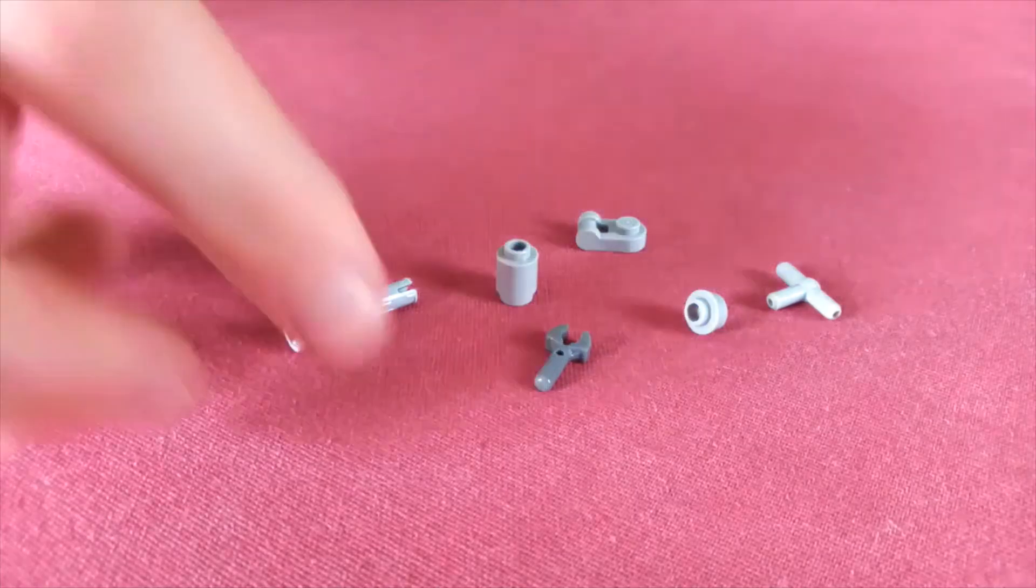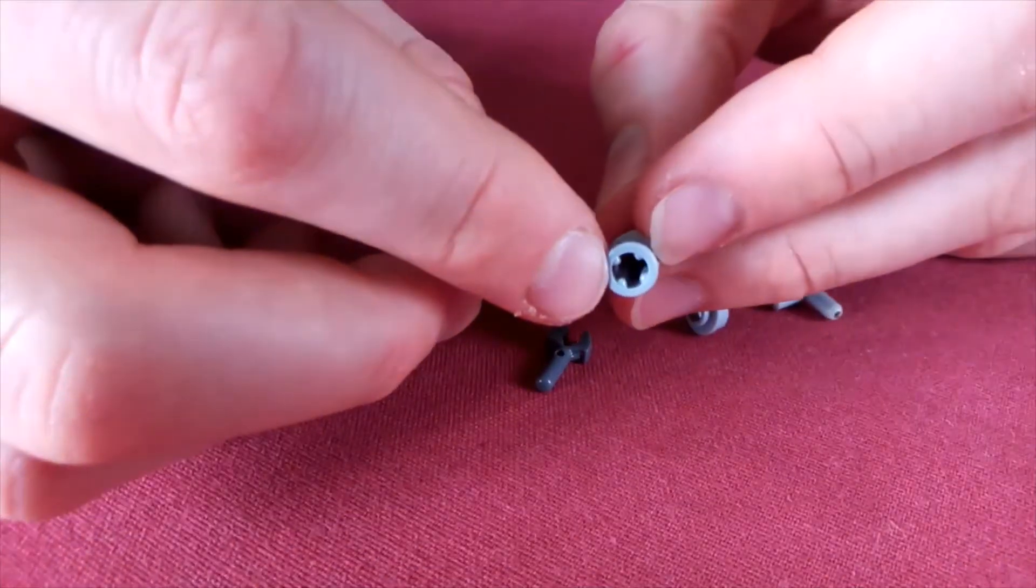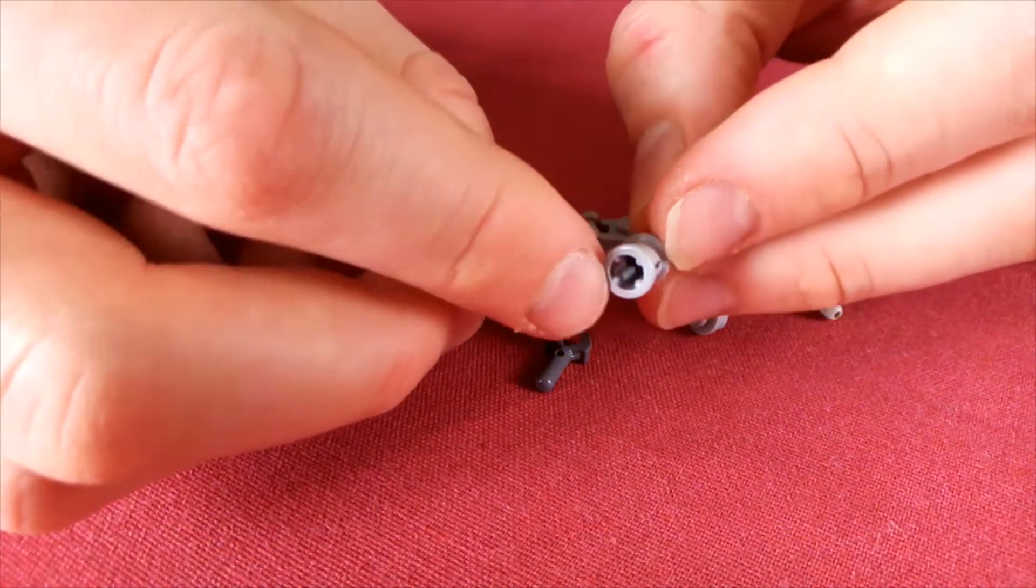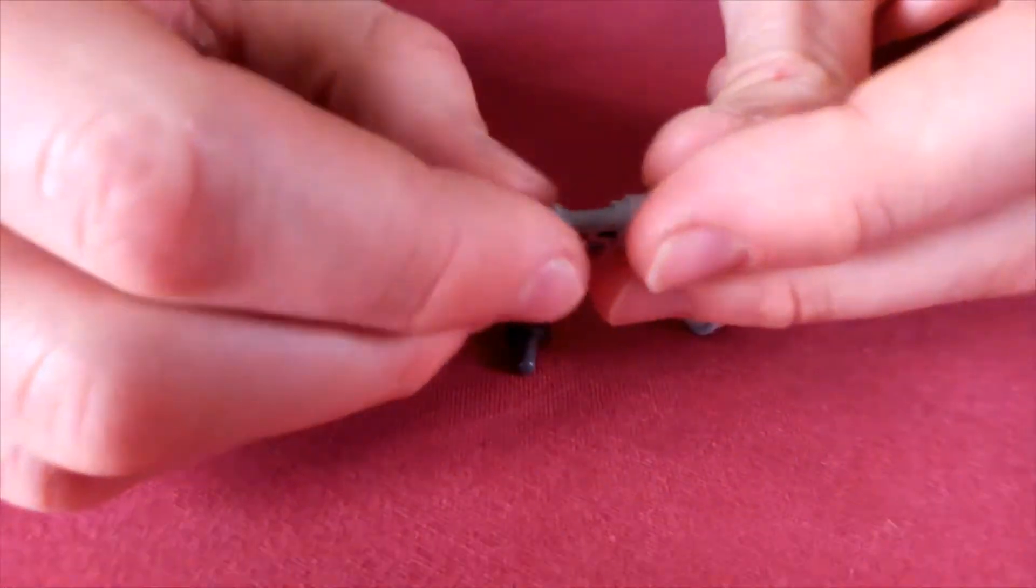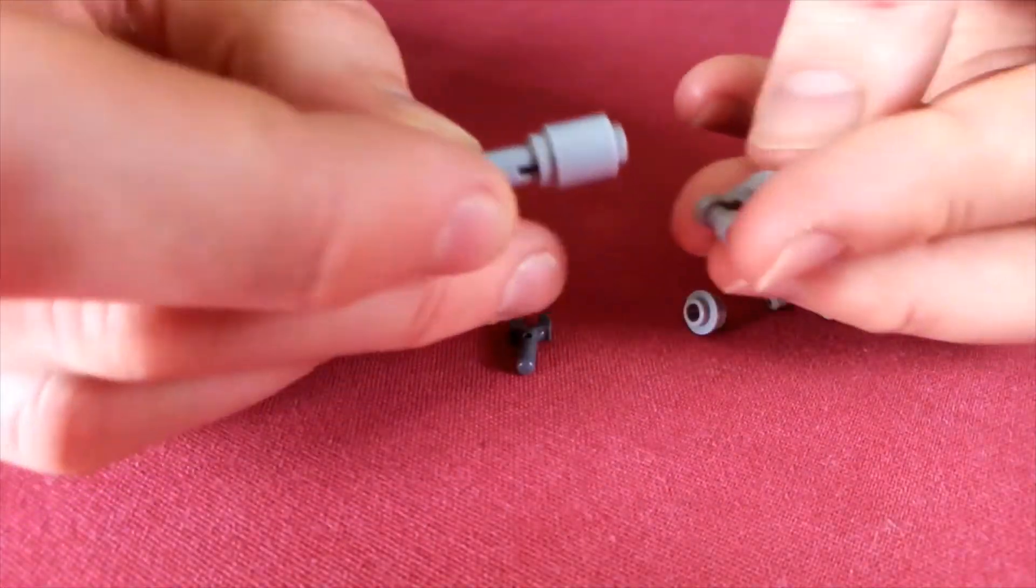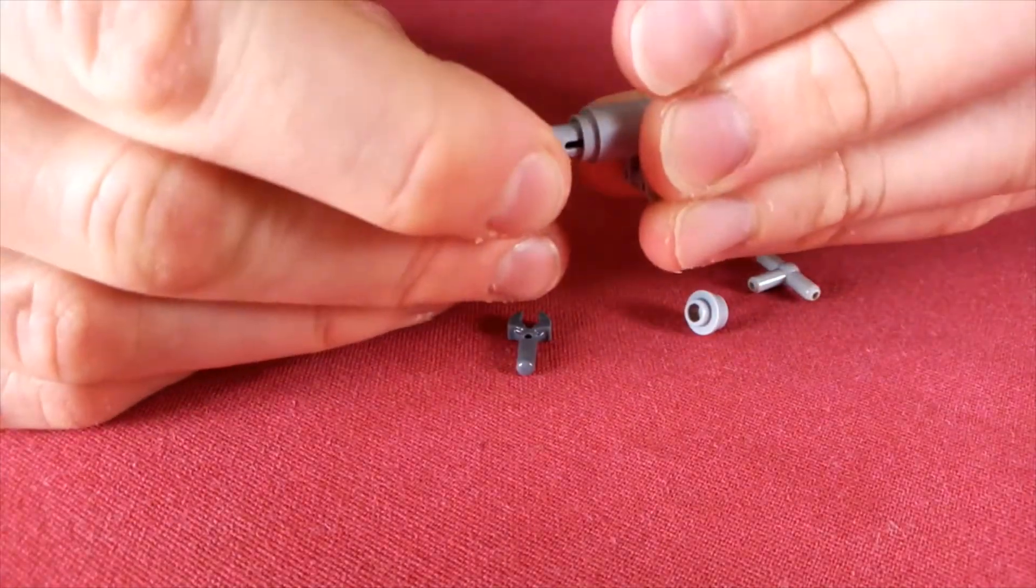We'll start with the gun. The first piece will be this Technic piece here, and it's really useful because it's got this cross pattern which gives a rifling effect. Then we'll take a cylinder piece which goes on the end there, then this piece with a small bar which goes like that on the end of the cylinder.